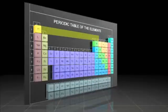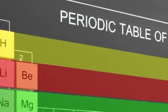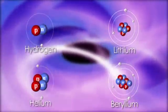Rows, or periods, are based on the number of shells. The first row of elements, hydrogen and helium, have all their electrons in one shell. Elements in the second row have two shells and so on.